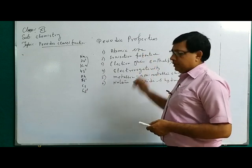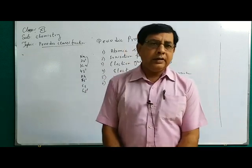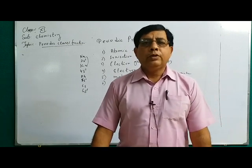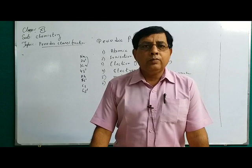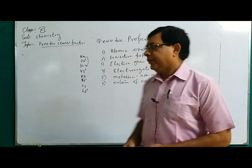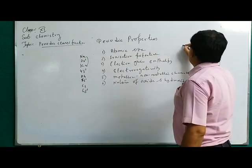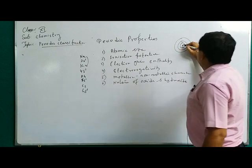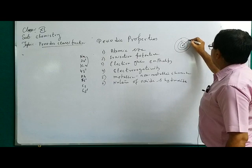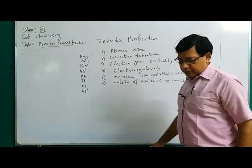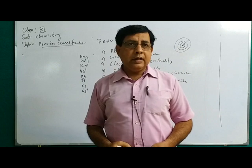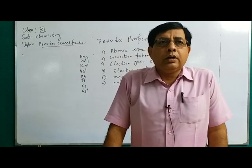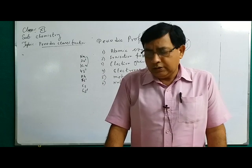First, atomic size. What is atomic size? You have already learned this in class 10. Atomic size is the distance between the center of the nucleus to the outermost shell of the electron cloud. For example, in a sodium atom — this is the nucleus, this is the first shell, second shell, third shell — from the center of the nucleus to the outermost shell, that distance is called atomic size.